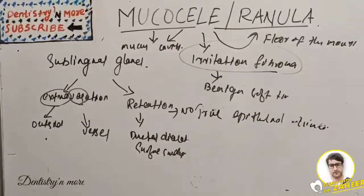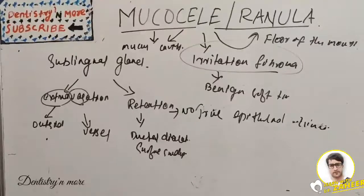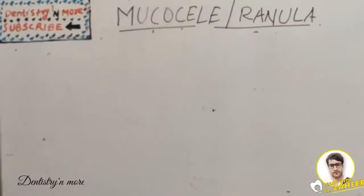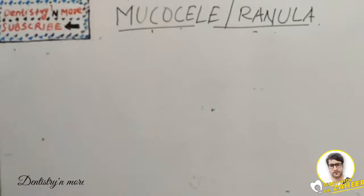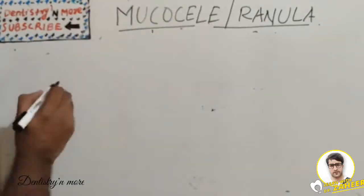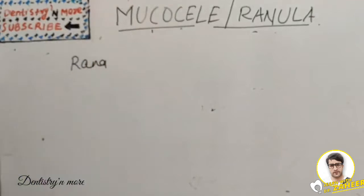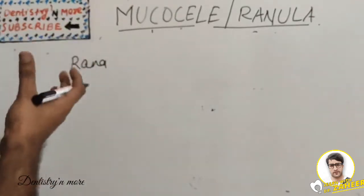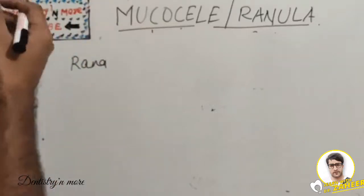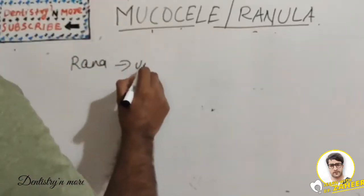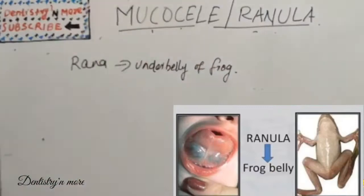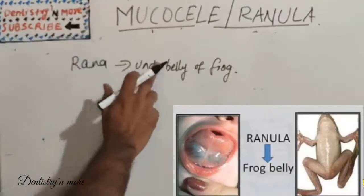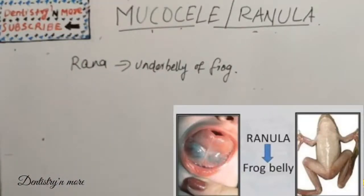A ranula is a mucocele that occurs in the floor of the mouth. The term comes from the word 'rana' because the swelling resembles the translucent underbelly of a frog — as you can see in the picture here. That is why it has got that peculiar name, because this swelling resembles the translucent underbelly of the frog.